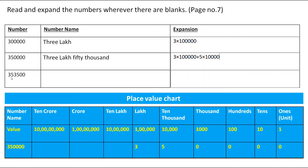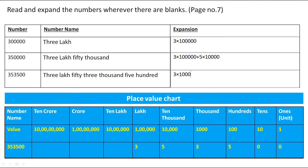The next number is 3,53,500. In the place value chart, 3 is on the lakh place, 5 on 10,000, 3 on 1,000, 5 on 100, and 0 on 10s and 1s. The number name is three lakh fifty-three thousand five hundred. The expansion is 3 × 1,00,000 + 5 × 10,000 + 3 × 1,000 + 5 × 100.